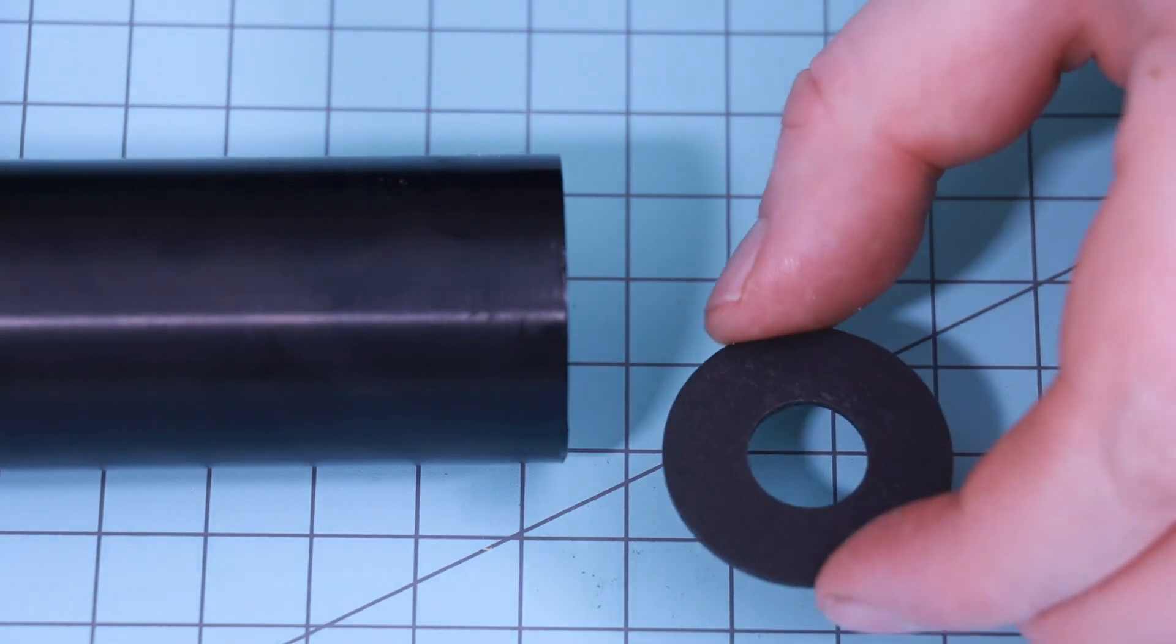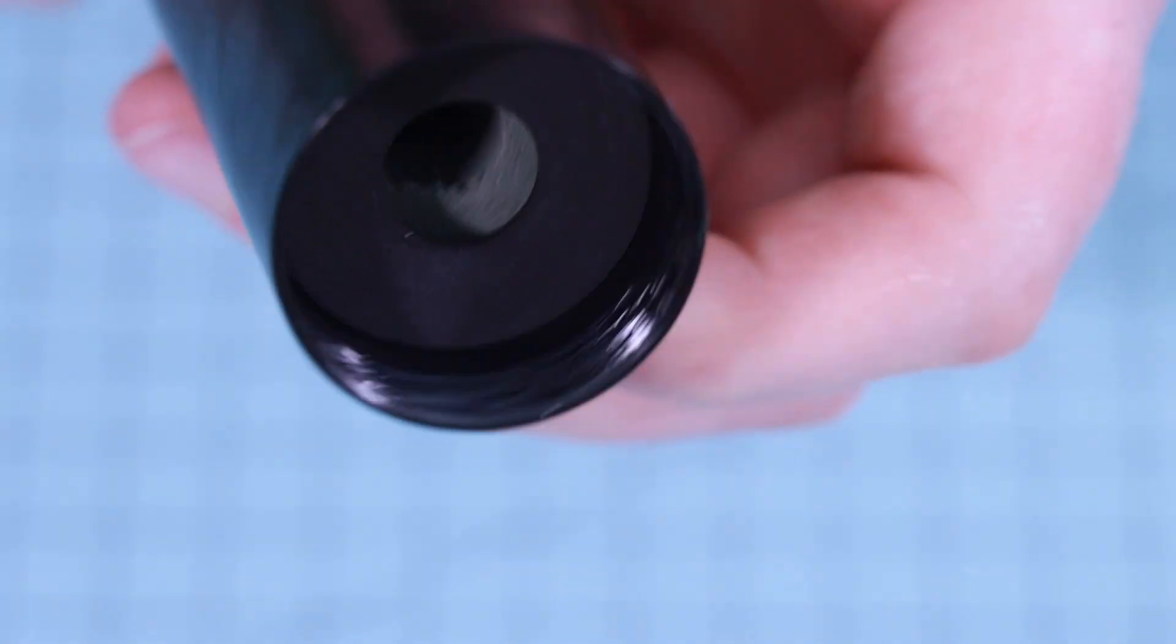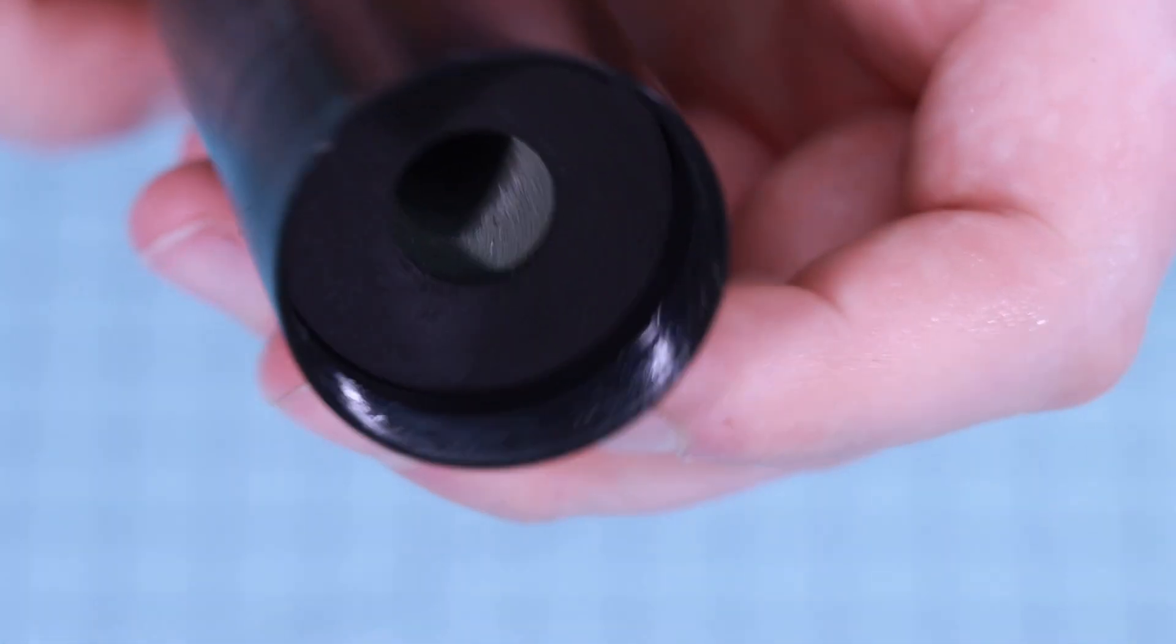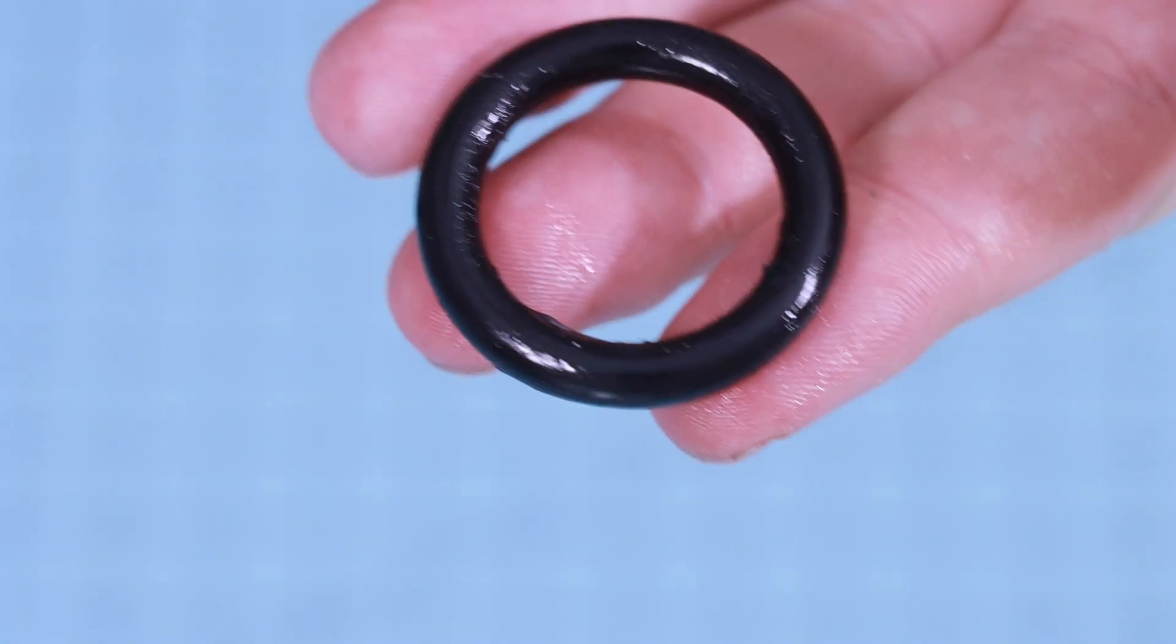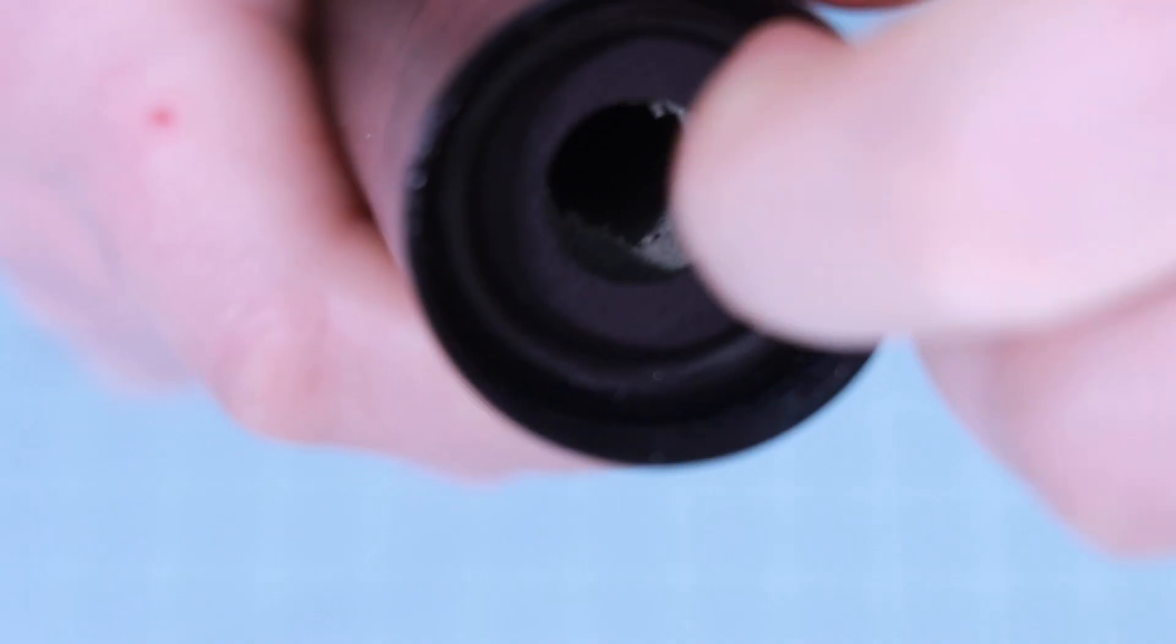Now let's insert the aft insulator into the aft end of the motor. Make sure it's fully seated up against the propellant grains. Now let's take the aft o-ring and insert it into the motor. Make sure it is fully seated.